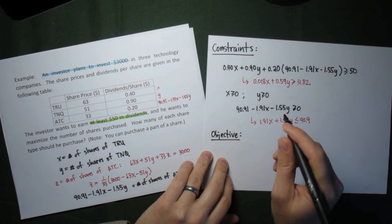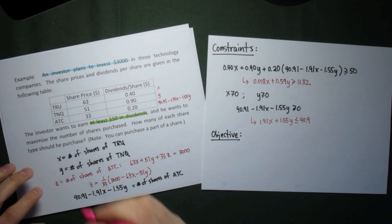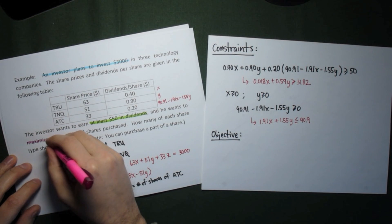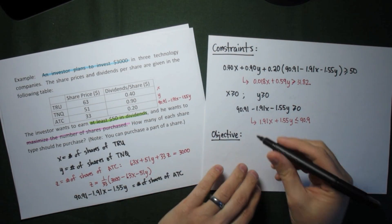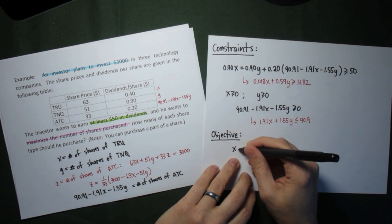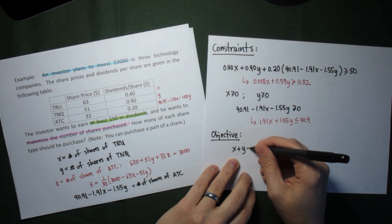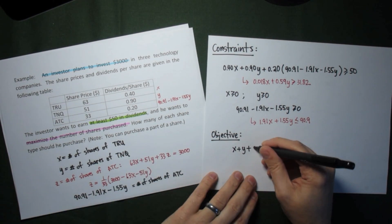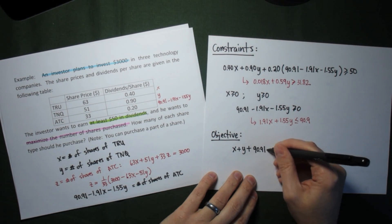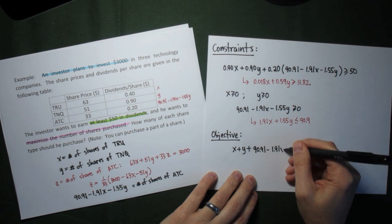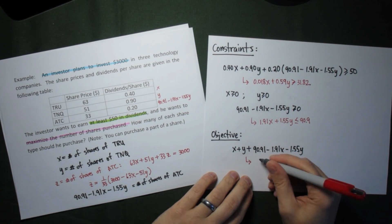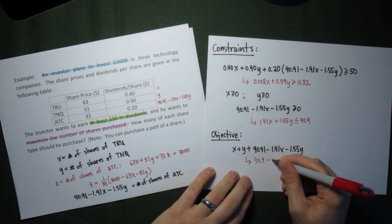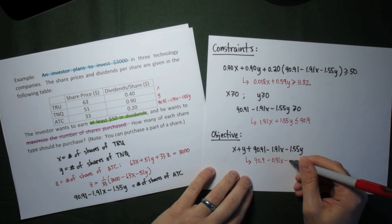Finally, to get the objective function, we want to see what we need to maximize, or minimize. In this case, we want to maximize the number of shares. Just the number, not the value. And so, number of shares of TRU is x, number of shares of TNQ is y, number of shares of ATC is the entire expression that we had for z. Simplifying this, collecting the x's and the y's, we get this expression, and this will be our objective function.